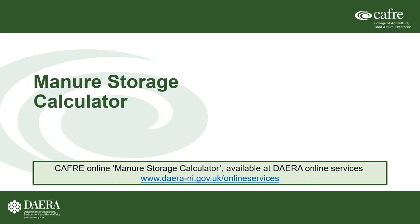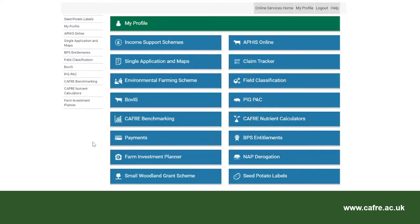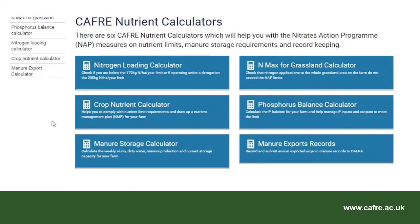Welcome to the CAFRI help video for Dara Online Services Manure Storage Calculator. To complete the manure storage calculator, you will require a copy of the Nitrates stock count from APHIS. After logging on to Dara Online Services and selecting the CAFRI nutrient calculators, select the manure storage calculator.